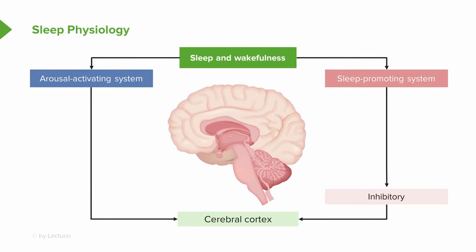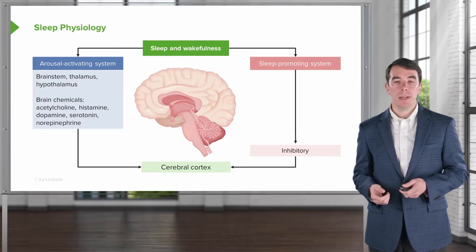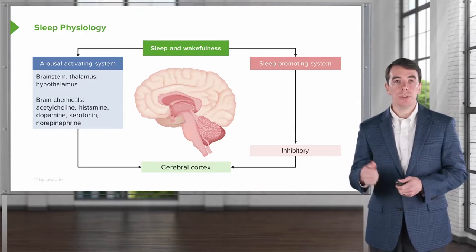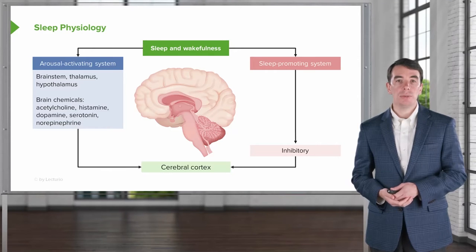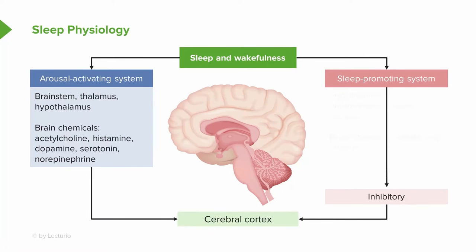So let's start with a discussion of sleep physiology. When you think about wakefulness and sleep, I want you to think about the yin and the yang of the wake-promoting areas of the brain and the sleep-promoting areas of the brain. First, let's talk about the left part of this slide, the arousal and activating system. This starts down in the brain stem, in the reticular activating system, which turns the brain on. The key anatomic structures of the brain stem, thalamus, and hypothalamus, and the brain chemicals that play a role in activating the brain are acetylcholine, histamine, dopamine, serotonin, and norepinephrine. And these turn the brain on. On the opposite side, we have the sleep-promoting system, which puts us to sleep. And the critical structures there are the hypothalamus and ventrolateral preoptic nucleus and a number of brain chemicals, including GABA.